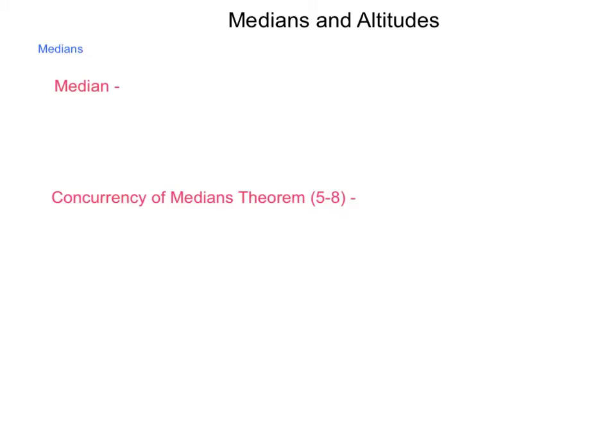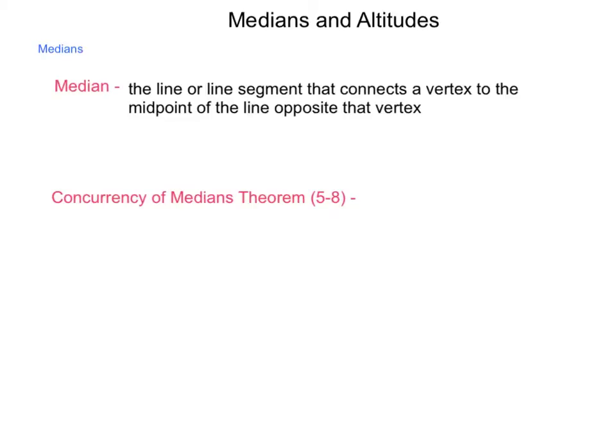In this lesson, we're going to be studying medians and altitudes in triangles. First definition, what exactly is a median? A median is the line or line segment that connects a vertex to the midpoint of the line opposite that vertex.